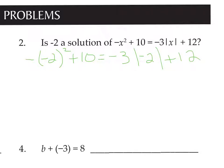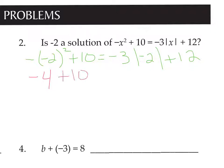We're going to simplify. When we look here, we have an exponent and these negatives — do not simplify these first. Exponents come first. So negative 2 times negative 2 makes positive 4, and then this negative comes down. This becomes negative 4 plus 10, which makes positive 6.